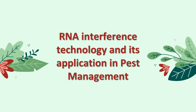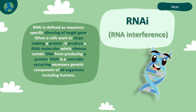Ribonucleic acid interference technology and its application in pest management. RNAi is defined as sequence-specific silencing of a target gene. When the cell wants to stop making a protein, it produces RNAi molecules which silence certain DNA from producing a protein. RNAi is a naturally occurring, necessary genetic component for all organisms, including humans.